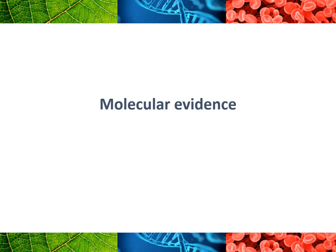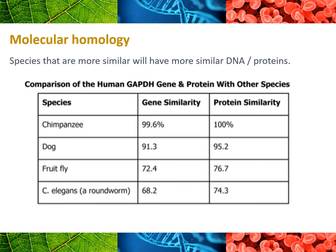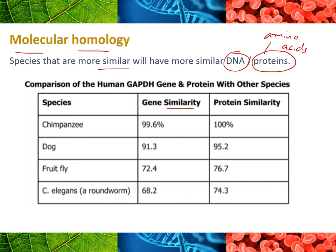We also looked at molecular evidence — evidence from molecules, mostly DNA and amino acids. Molecular homology is the study of how similar molecules are between different species, looking at DNA or proteins and their amino acid sequences. For example, comparing humans to chimpanzees: 99.6% similar in a certain gene, and the protein is exactly the same. The more similar the molecules, the more closely related two species are.